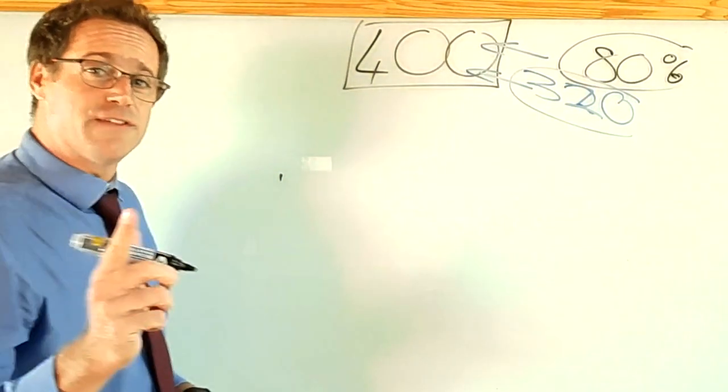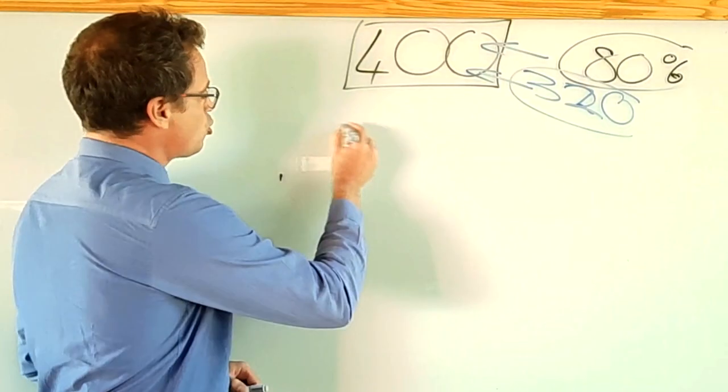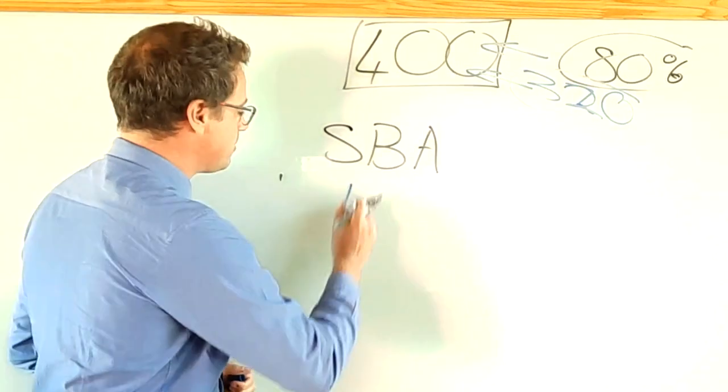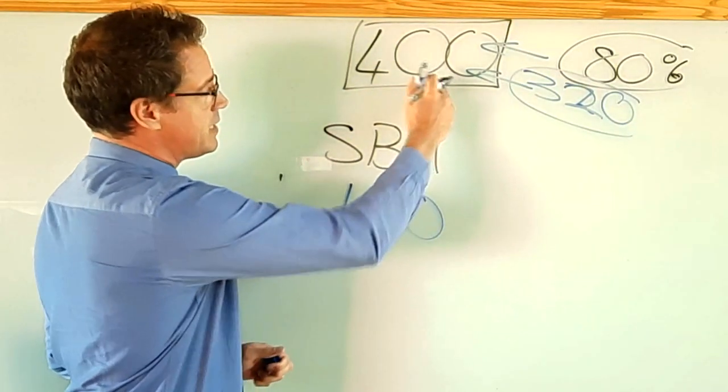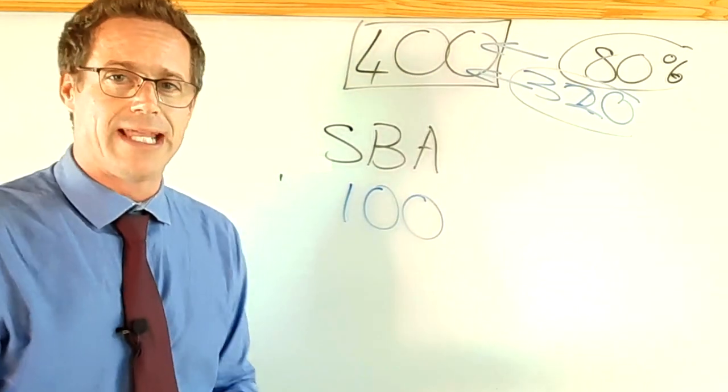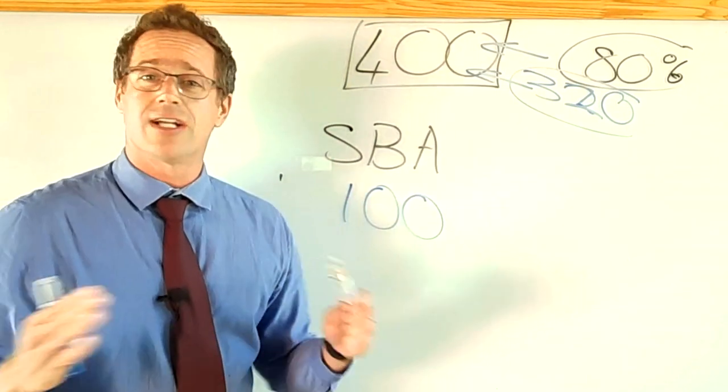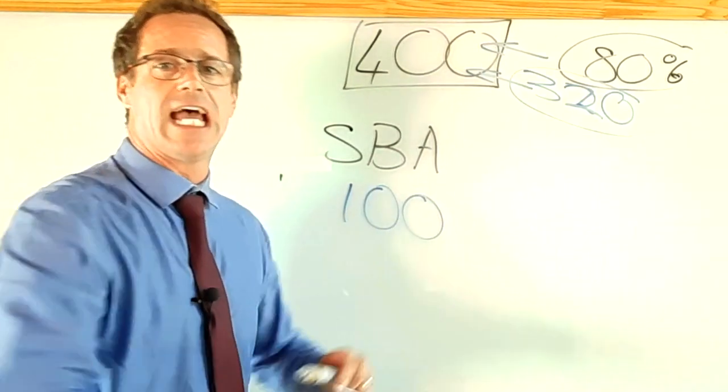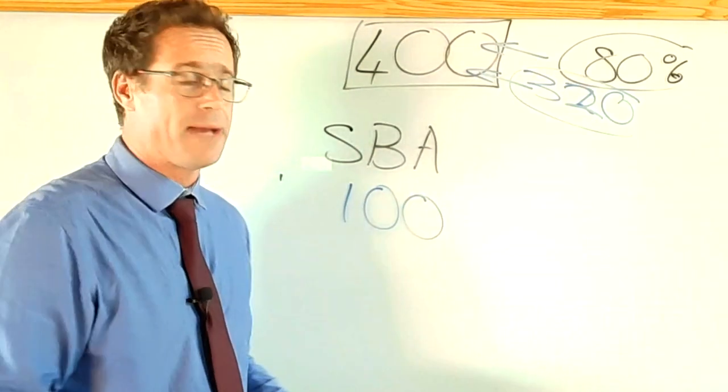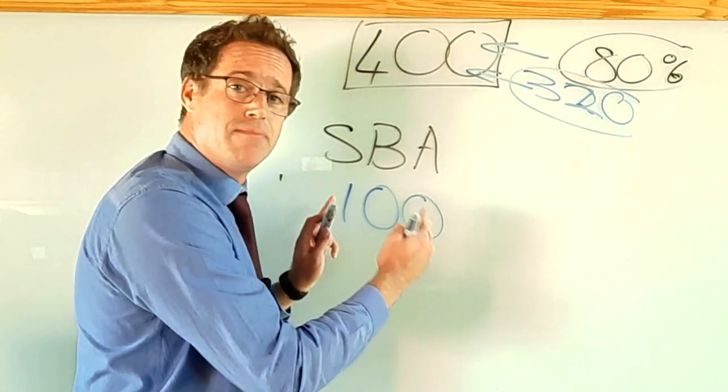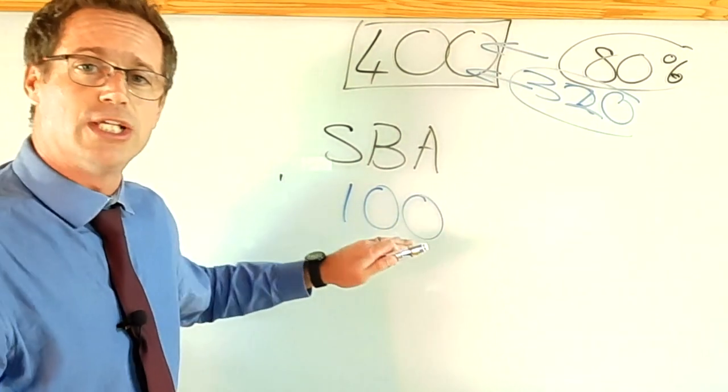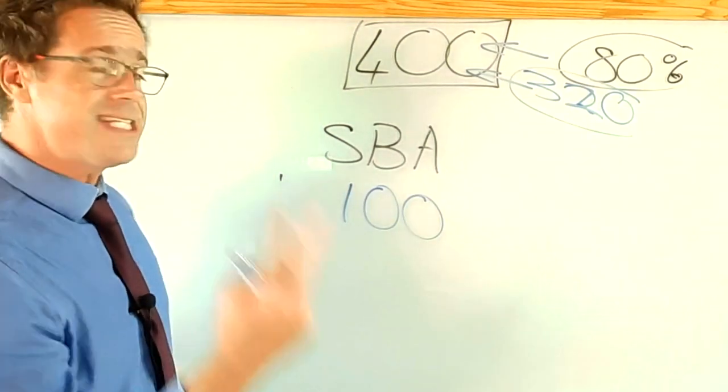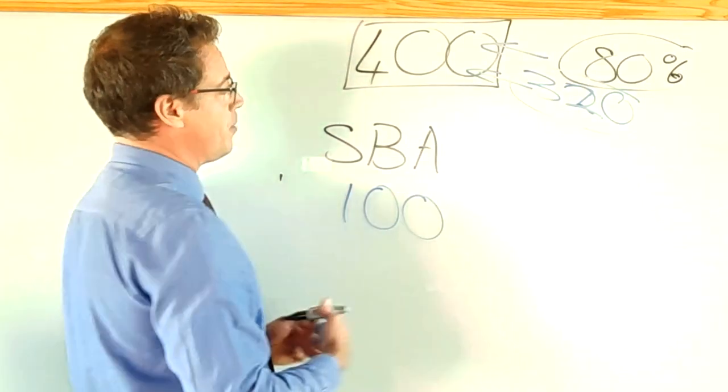Your school-based assessment makes up 100 marks of this 400. Now what do I mean by that? SBA is all the class tests that you're going to write, all your exams - your June exam, your September exam, your trial exam - any work that you do in class that you get marks for goes into the school-based assessment of 100 marks. Your second 100 comes from your PAT.